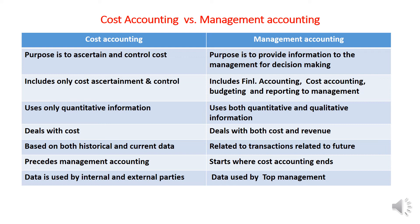In cost accounting, we use only quantitative information — actual cost incurred is recorded and analyzed. But in management accounting, we use both quantitative and qualitative information. Cost accounting deals with cost only — cost of a particular product, material, labor, and other expenses. Management accounting deals with cost and revenue; we consider sales and other revenue items as well.